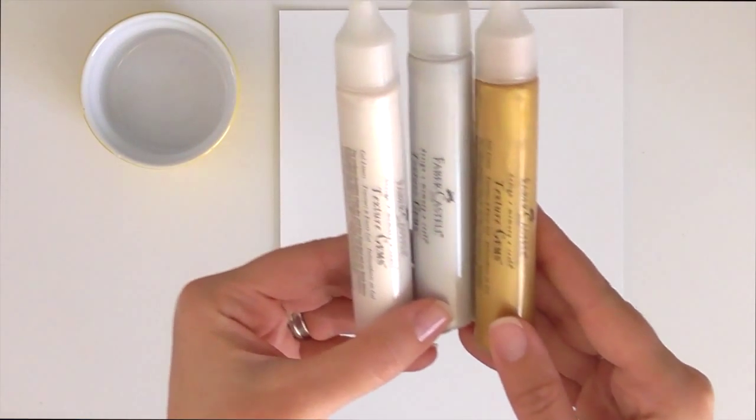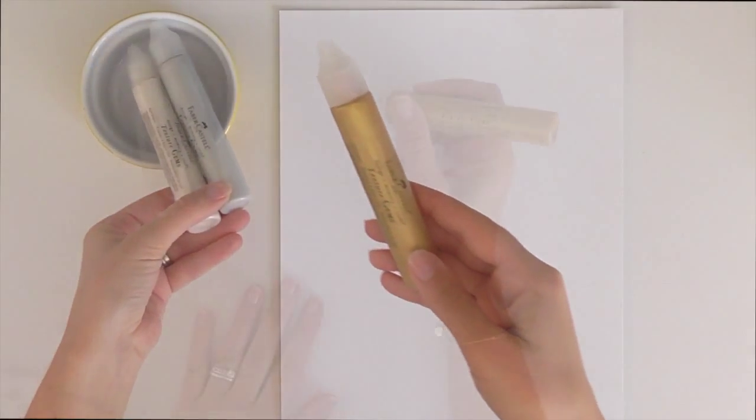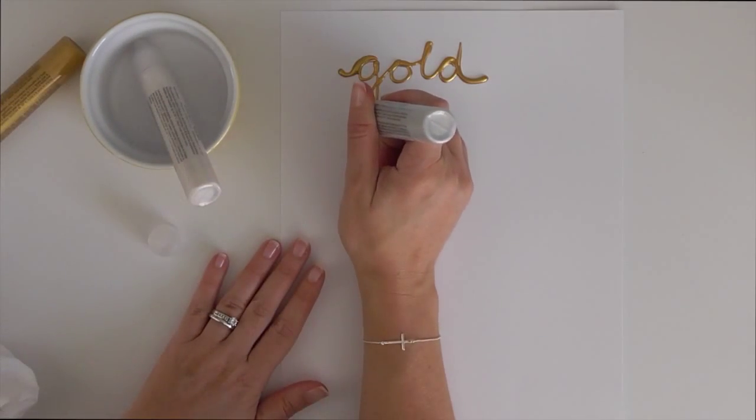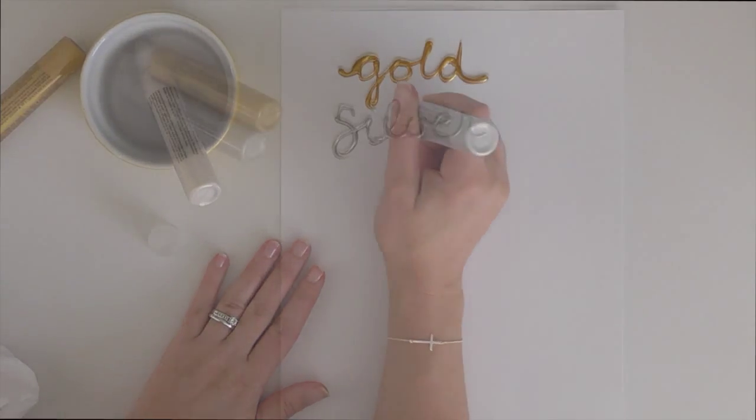The metallic texture gems come in these three colors: gold, silver, and pearl.